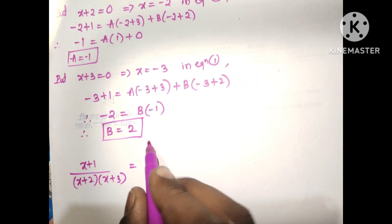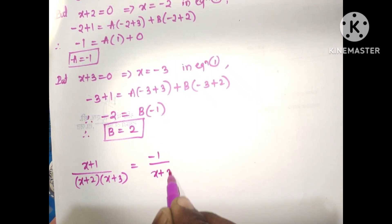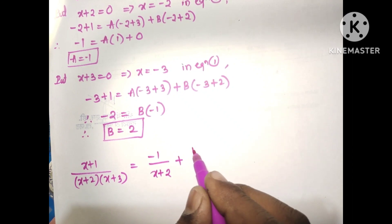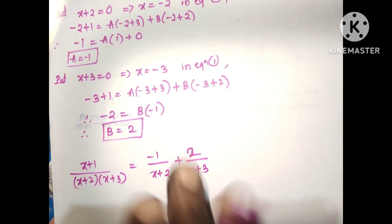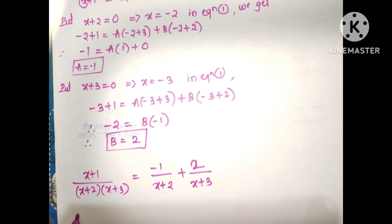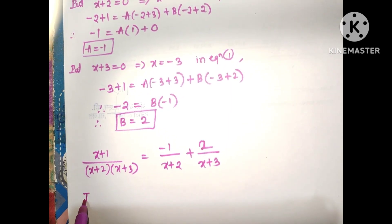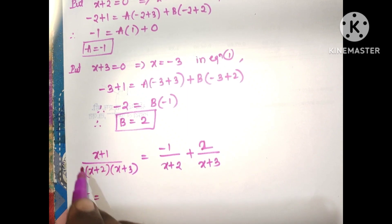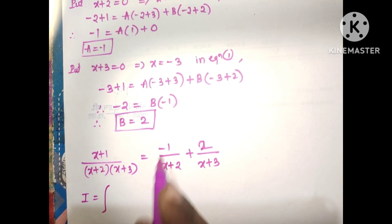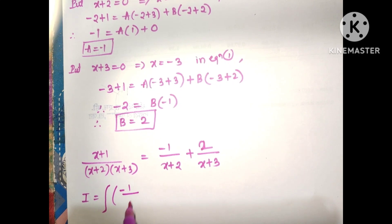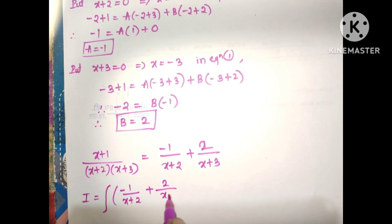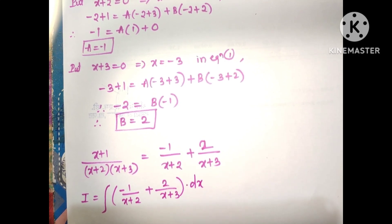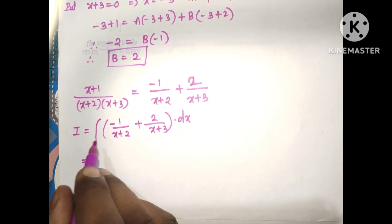We have found A equals minus 1 and B equals 2. So x plus 1 divided by x plus 2 into x plus 3 equals minus 1 divided by x plus 2 plus 2 divided by x plus 3. Now we write the integral of the whole bracket: integral of minus 1 divided by x plus 2 plus 2 divided by x plus 3, all into dx.